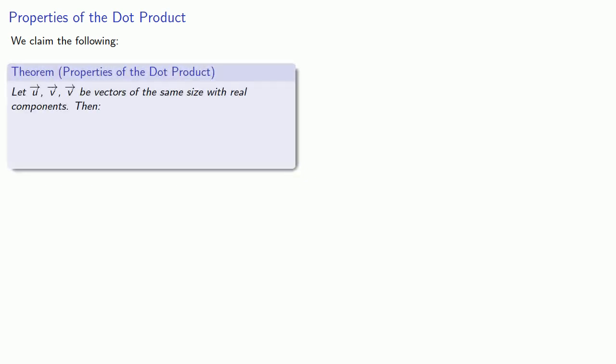We claim that the dot product has the following properties. First, we'll assume that we're dealing with vectors of the same size with real components. Then, the dot product of u and v is the same as the dot product of v and u. We have commutativity.